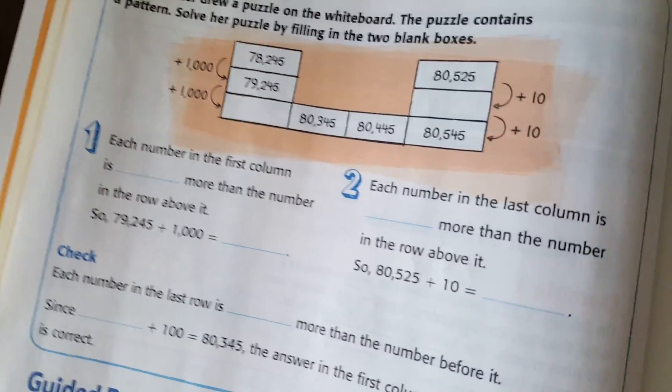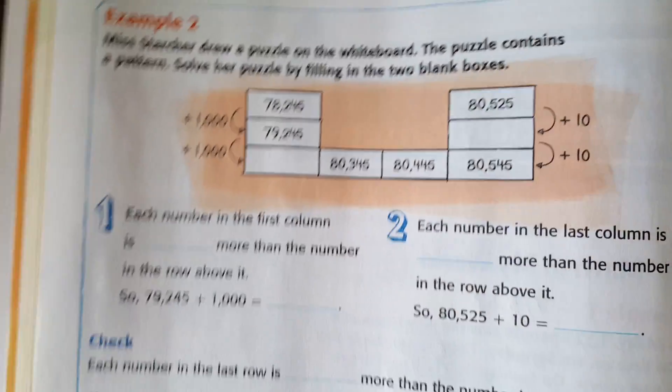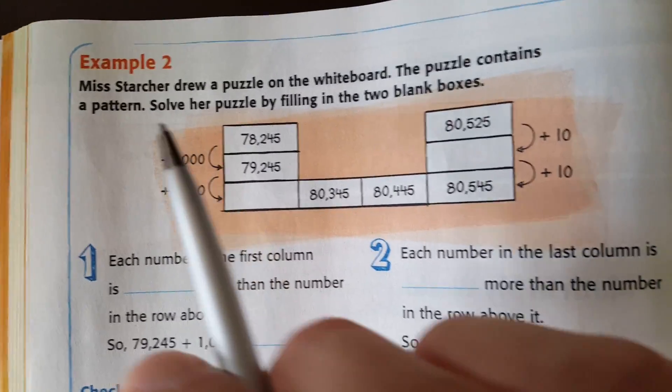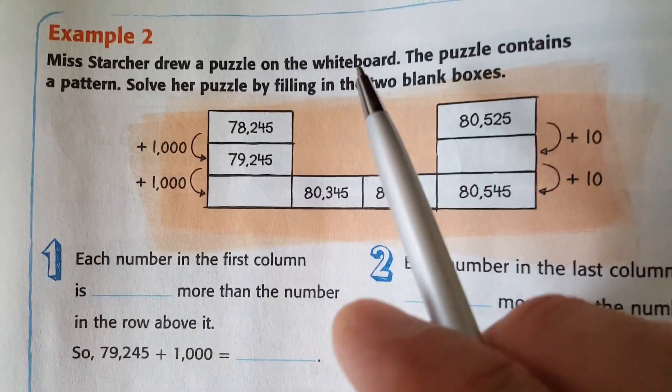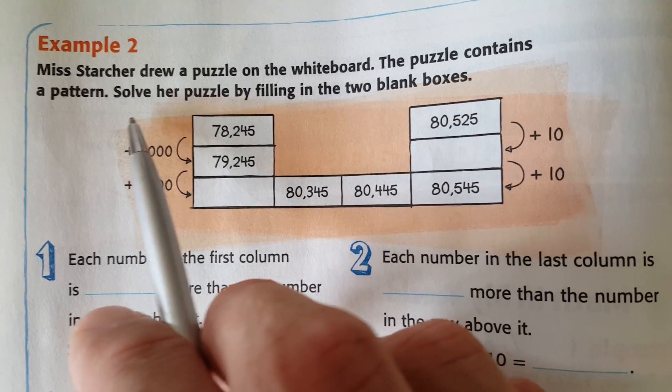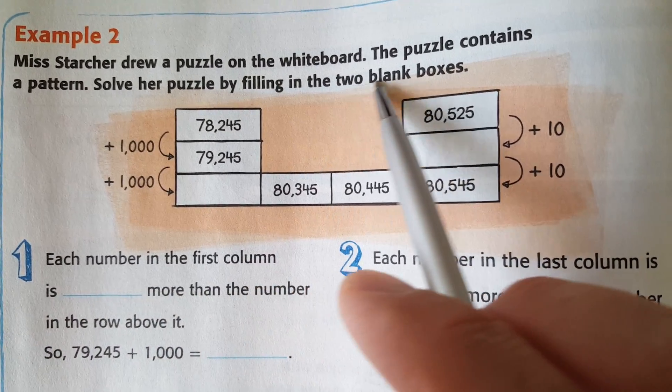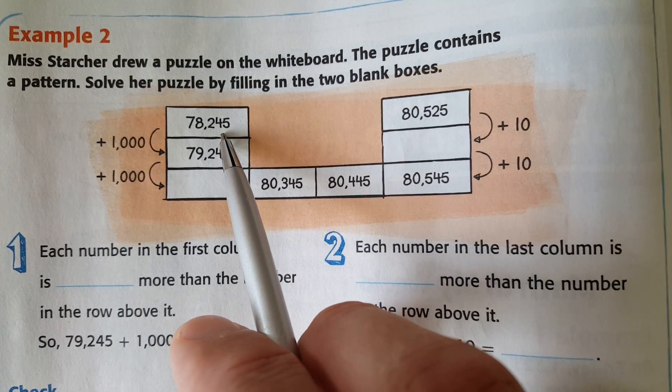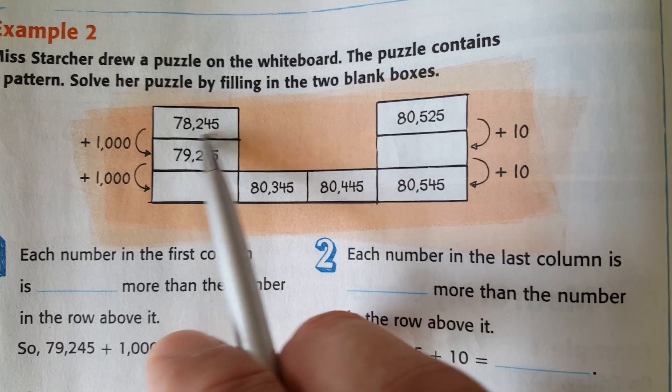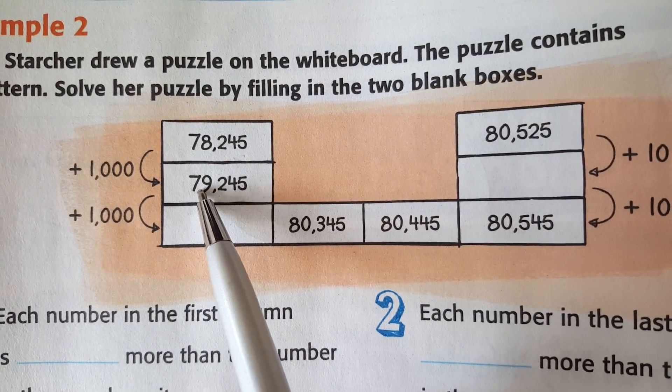They have another pattern. So a series of boxes. They can do it a number of different ways. Notice this example too. Miss S drew a puzzle on the whiteboard. The puzzle contains a pattern. Solve her puzzle by filling in the two blank boxes below. So you have this number, five digit number, 78,245. You add a thousand.